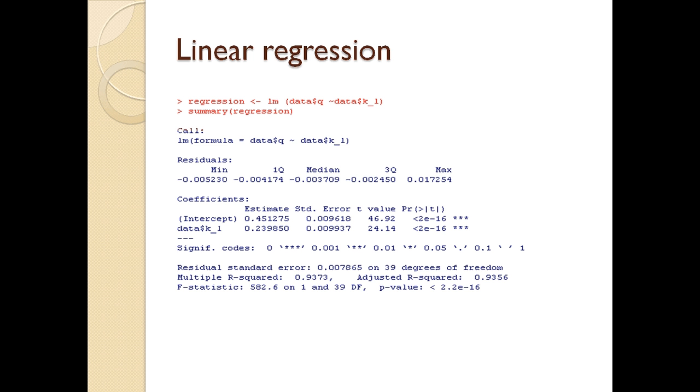After that, I use the Lm function for calculating regression. Here, the dependent variable is Q and the independent is capital-to-labor ratio denoted by small k. I separate them in the argument with a tilde sign.